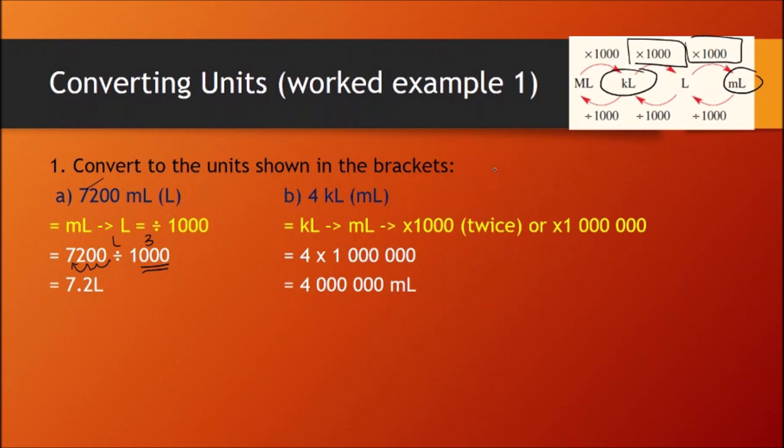So you could either literally just do four times a thousand, which equals 4,000, and then do 4,000 times a thousand again to get your answer, which is 4 million. Okay. But what we can do is we can add all these zeros together. So how many zeros are there? There's three here and there's three here. So there's six zeros. So you can just write one with six zeros to give you the total amount of number. You just have to multiply it once. So rather than doing two steps over here, I could just do the one step, which is over here. And that's given me 4 million millilitres.